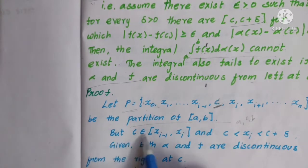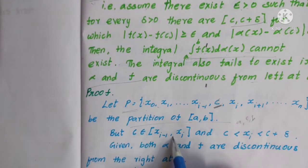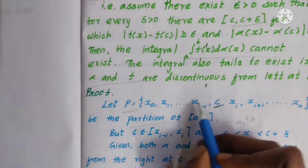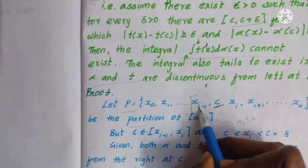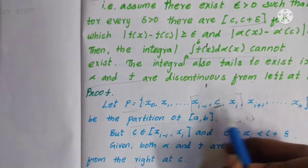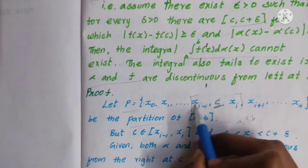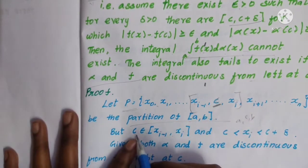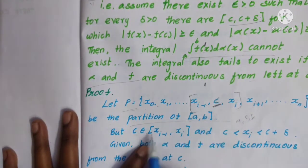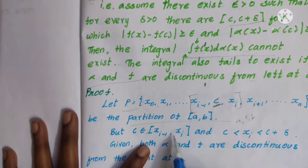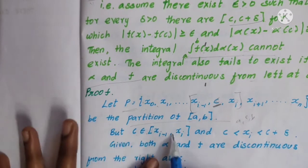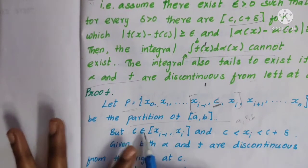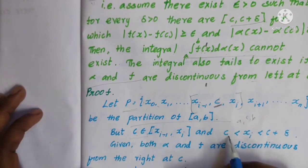But c belongs to some closed subinterval [x_{i-1}, x_i] of the partition. In this closed interval [x_{i-1}, x_i], c is a point. That is why c belongs to the closed interval [x_{i-1}, x_i].